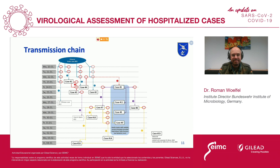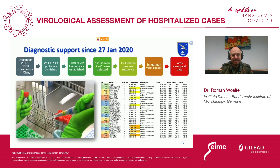The transmission chain was investigated by the public health officers in the city of Munich. The transmission chain started from the Chinese index case. All of those patients got isolated and we were able to contain this very first cluster in Germany, which allowed us and the clinicians at the Schwabing hospital to investigate the course of illness in those patients in detail.